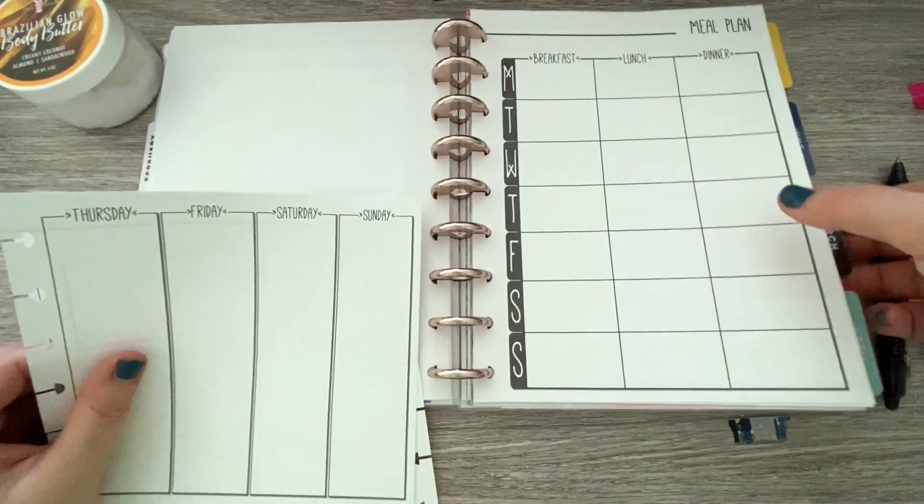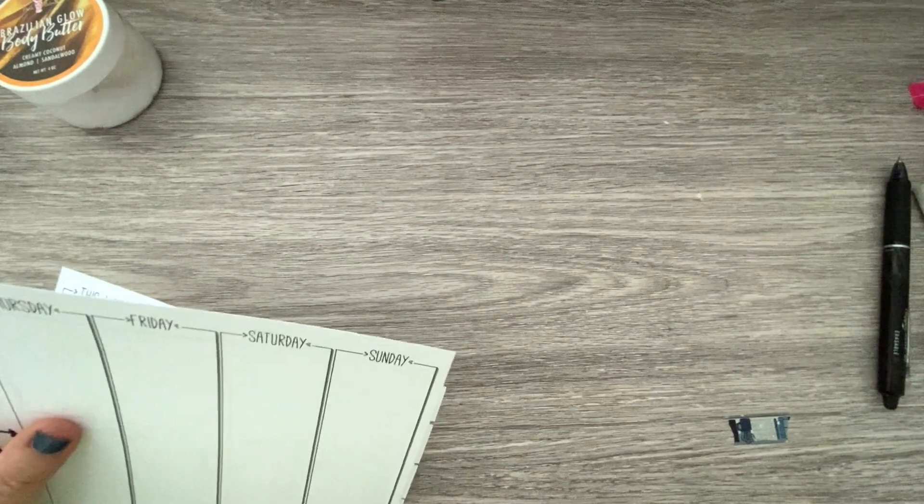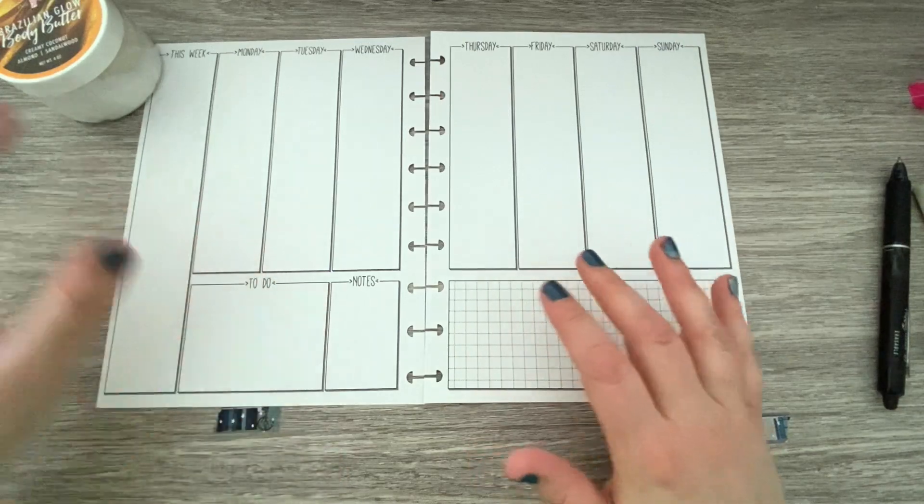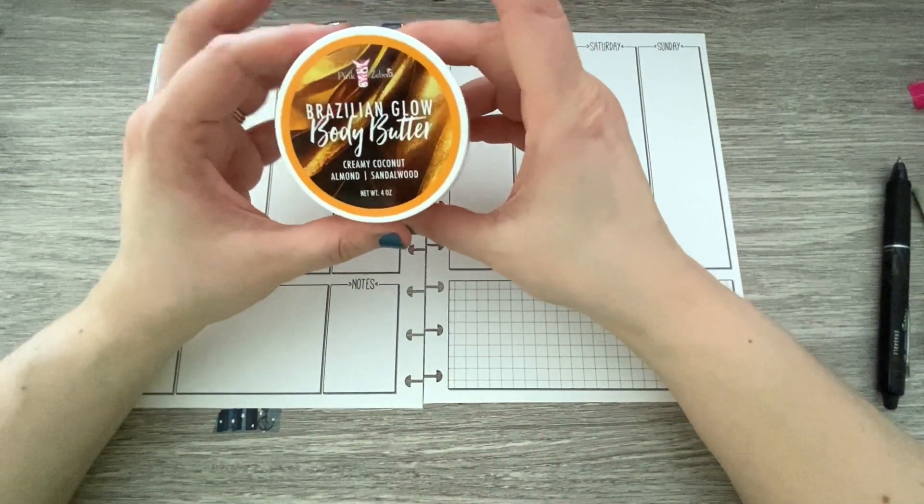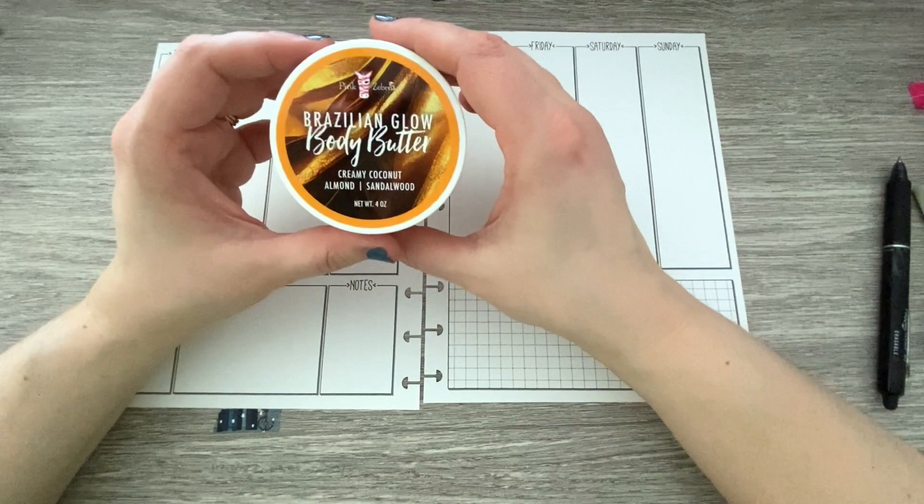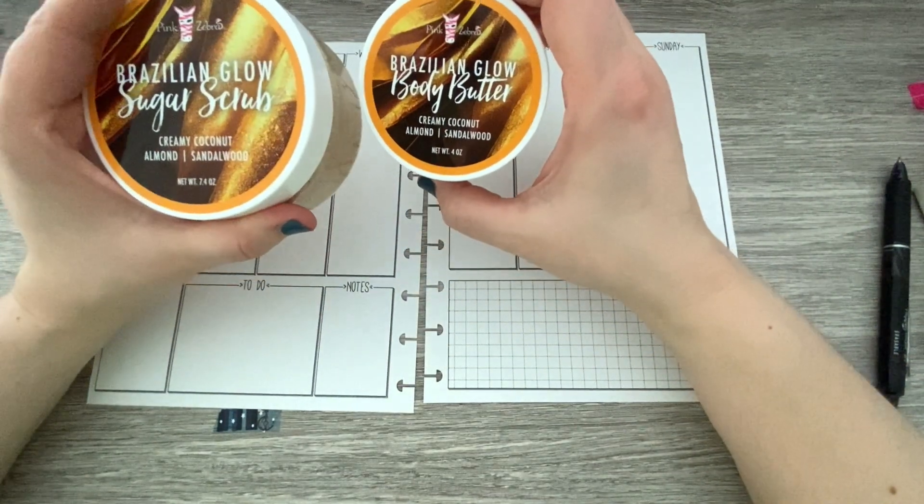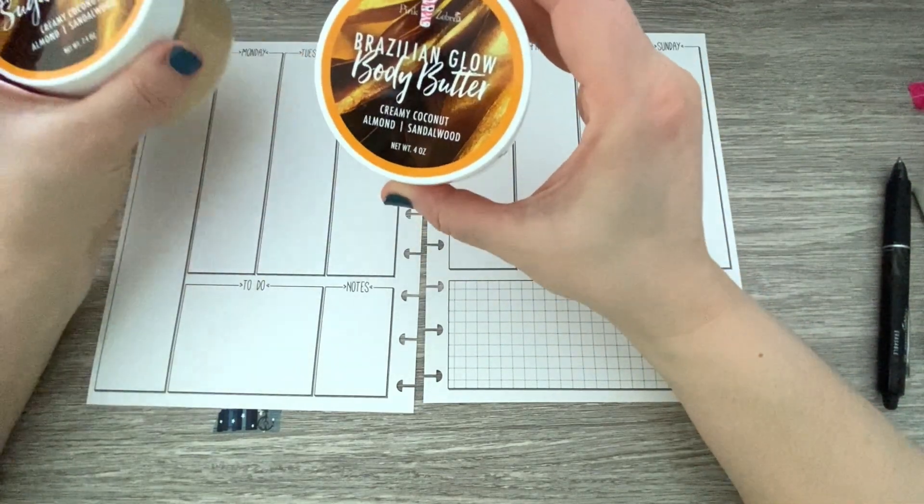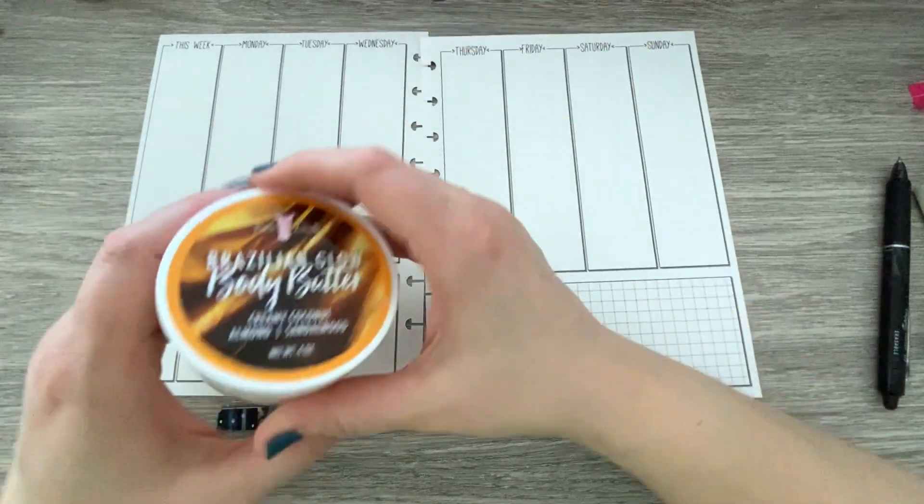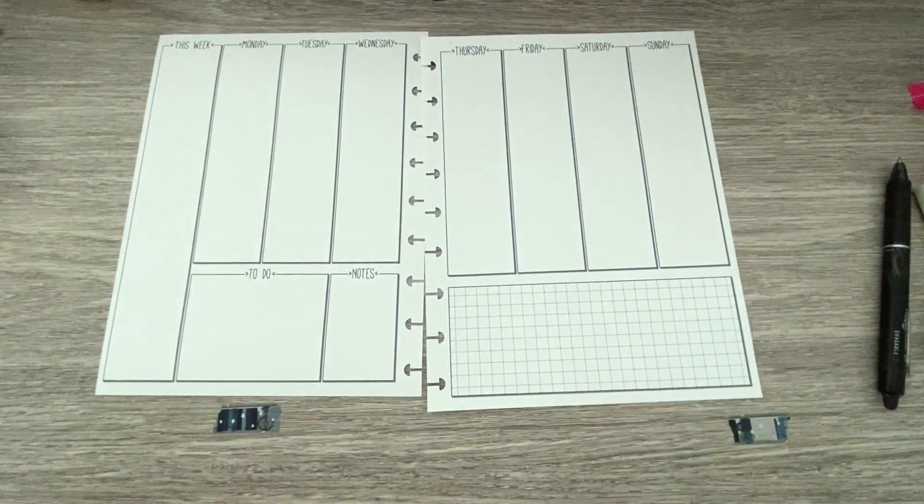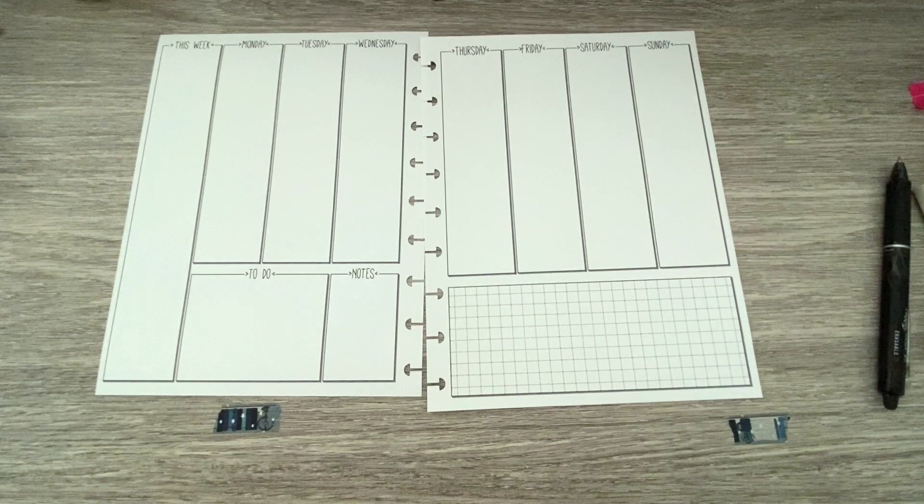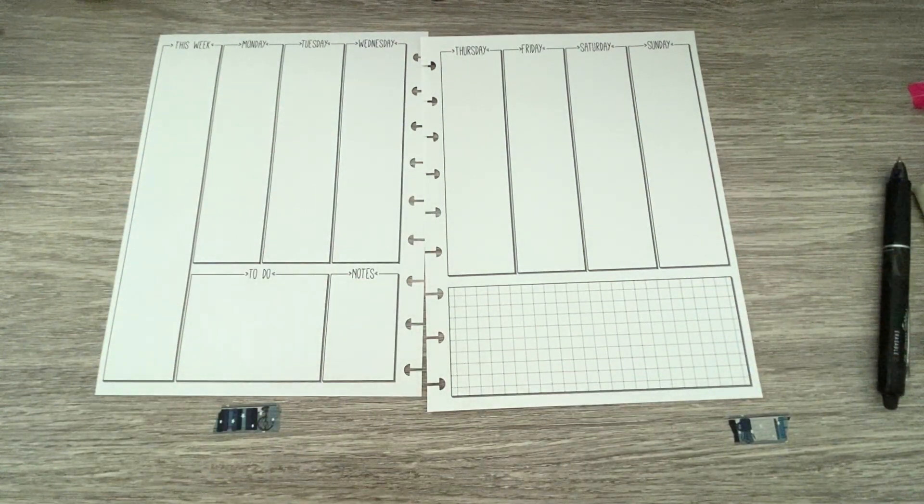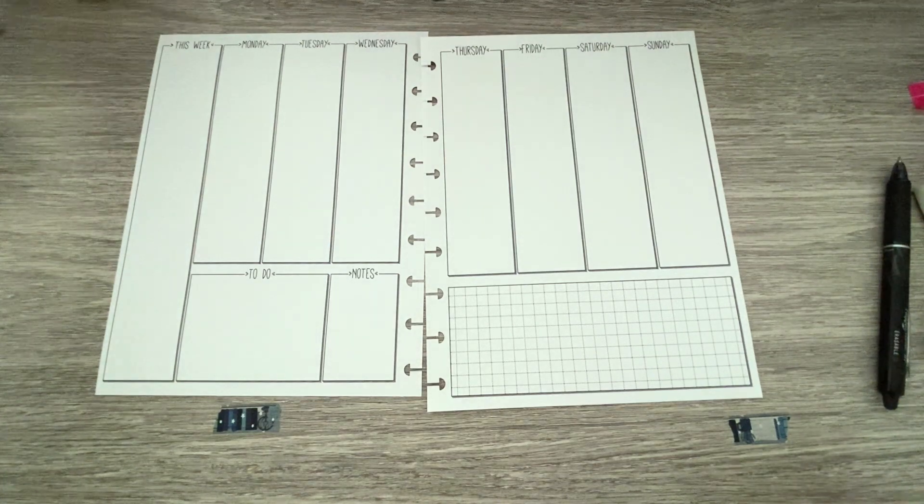My scent of the week that I am warming is Pink Zebras, a mix of Pink Zebras Self Care and Brazilian Glow. In our scent flirt this time, we got the sugar scrub and body butter and then a whole thing of sprinkles in this fragrance. It's creamy coconut, almond, and sandalwood. They suggested mixing it with the self-care sprinkles. Look how creamy this is. It's super creamy. I'm currently warming that in my little gnome guy today.